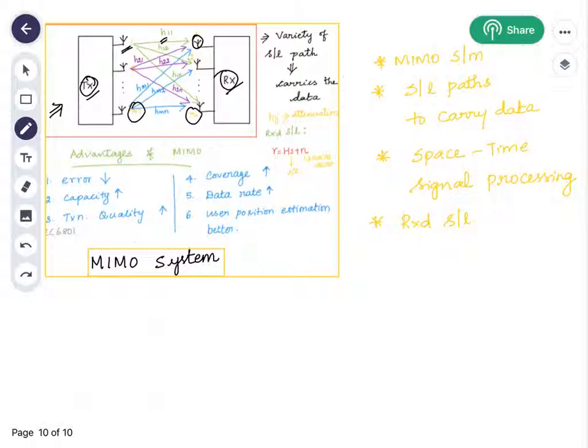By this we can say a MIMO system can use multiple antennas at the transmitter and receiver side, which enables a variety of signal paths to carry the data. The idea behind the MIMO system is space-time signal processing.